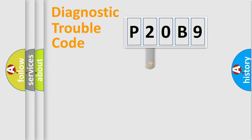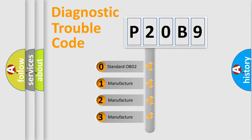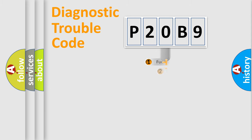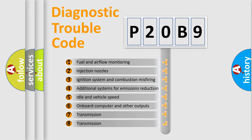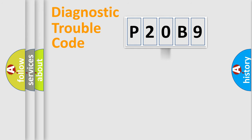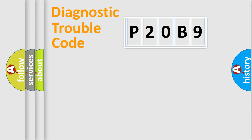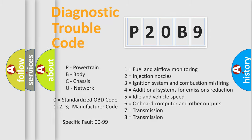This distribution is defined in the first character of the code. If the second character is expressed as zero, it is a standardized error. In the case of numbers 1, 2, or 3, it is a manufacturer-specific error expression. The third character specifies a subset of errors. This distribution is valid only for the standardized DTC code, and only the last two characters define the specific fault of the group.